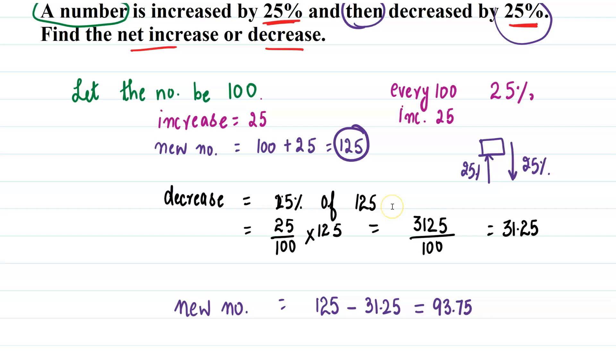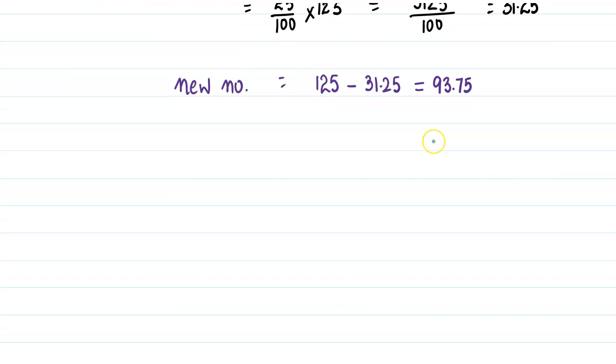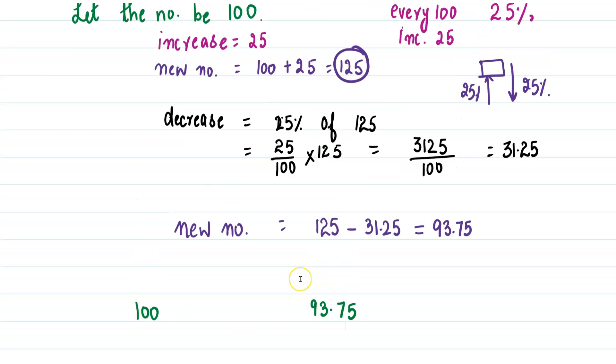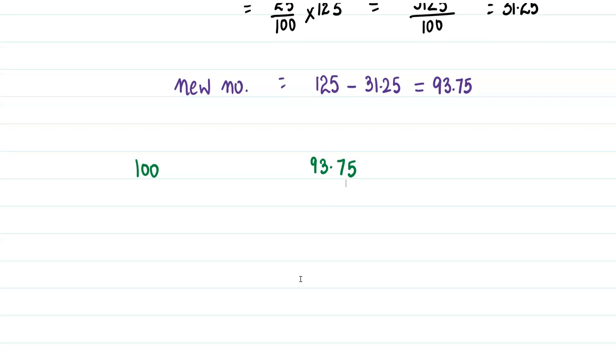Now we have to figure out the net increase or decrease. So let's first understand the meaning of net increase or decrease. So we started with the number 100 and it became 93.75. First tell me, is it a decrease or an increase? Yes, it is a decrease.